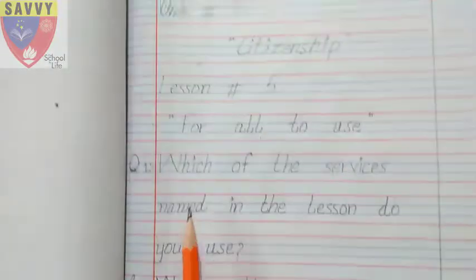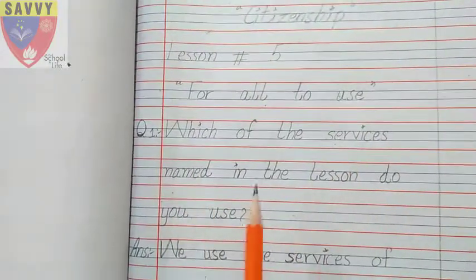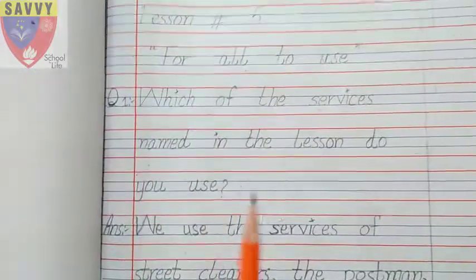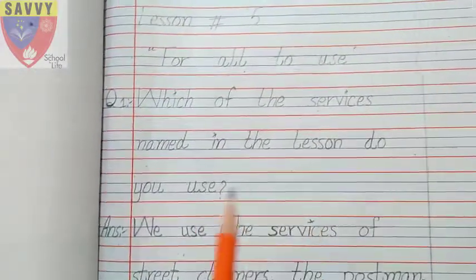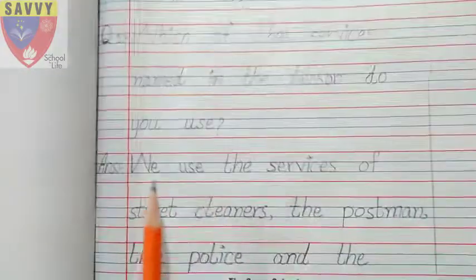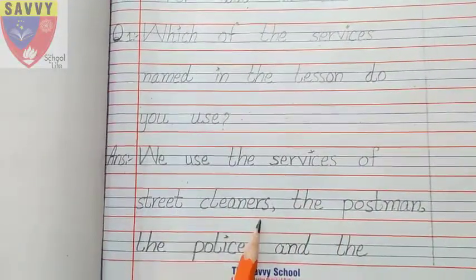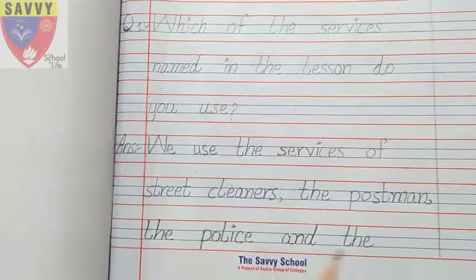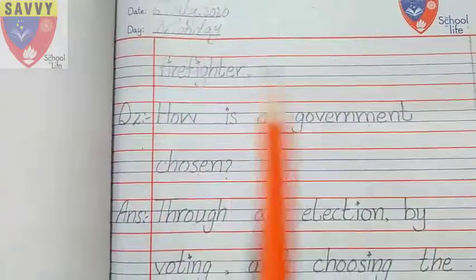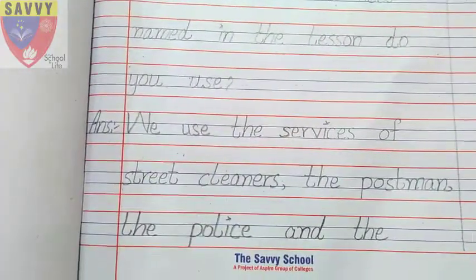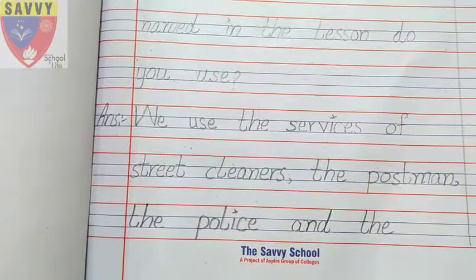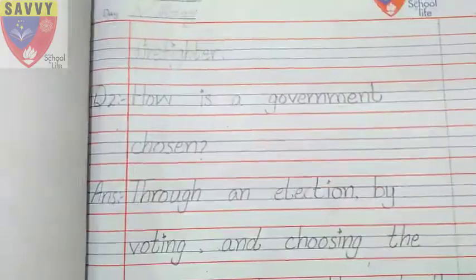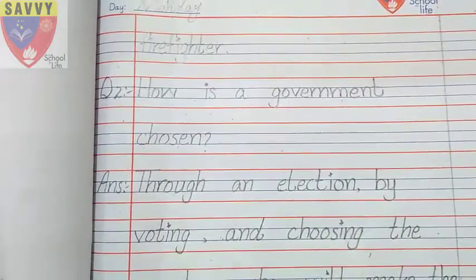Question number one: Which of the services named in the lesson do you use? Which services mentioned in the lesson do you use? We use the services of street cleaners, the postman, the police, and the fire fighter. Street cleaners clean the streets, postman, police, and fire fighters who fight fires.